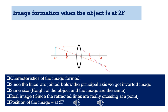The characteristics of the image formed: we got an inverted, real image of the same size as the object, and the position of the image is at 2f. For the exam, you may get a drawing and be asked to write the characteristics of the image. To do that, check if the image is formed below the principal axis — it is an inverted image. Check if the height of the image and object is the same, or if it is bigger or smaller. If the refracted rays are actually meeting at a point, you will get a real image; if they appear to come from a point, you will get a virtual image. Here we got the real image.